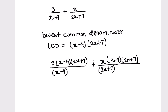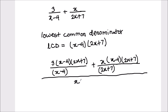Since we are multiplying both expressions by the LCD, we also need to divide by the lowest common denominator. So the common denominator of both expressions will be x minus 4 times 2x plus 7.